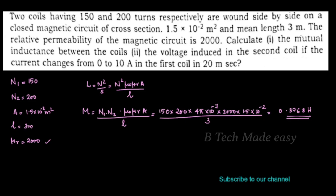So the mutual inductance between the two coils is 0.3768 henry. Now for the second question: voltage induced in the second coil if the current changes from 0 to 10 ampere in the first coil in 20 milliseconds.